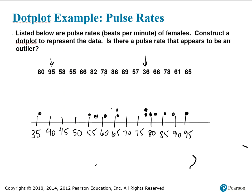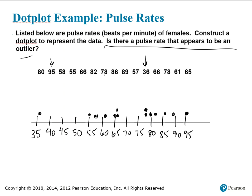61 and 65. The more data points you have, the clearer the shape of the distribution of the data. Here we're asked to determine if there appears to be an outlier. An outlier is a data value or a couple of data values that lie well outside of the cluster of the other data values. It looks like 36 may be an outlier because it lies far away from the rest of the data.